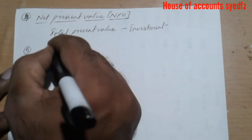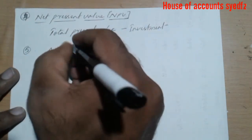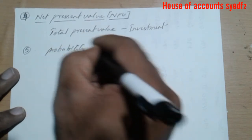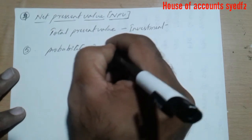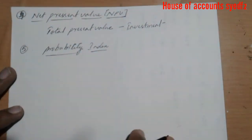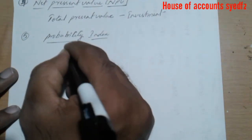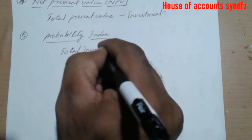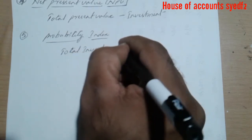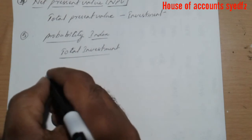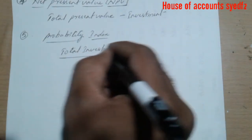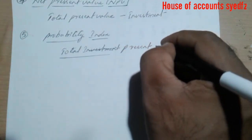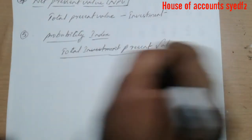We have another formula for the profitability index. Probability index — to calculate it, the formula is: total present value divided by investment.